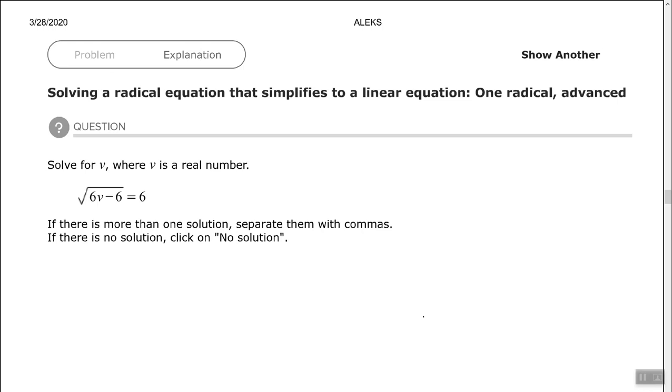So we have the square root of 6v minus 6 equals 6. The process is the same. We want to make sure that the radical is isolated to one side of the equal sign, which it is, and then we want to clear the radical by squaring both sides of the equation.